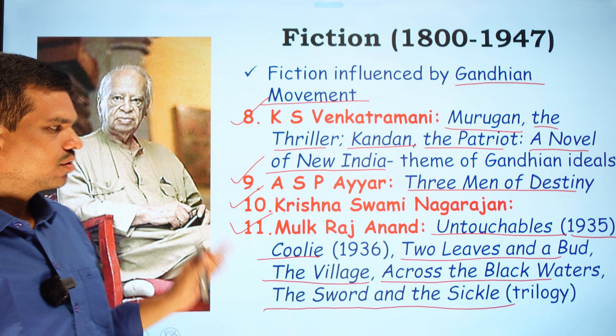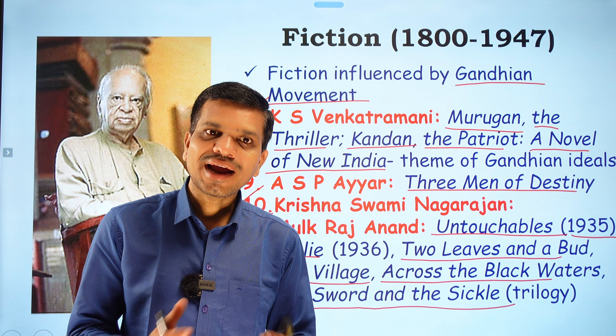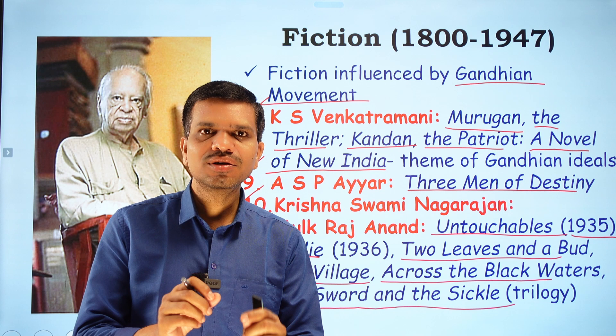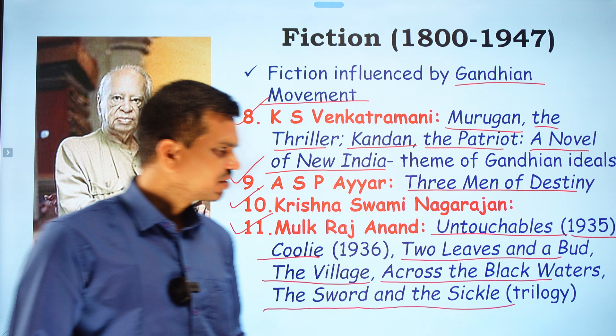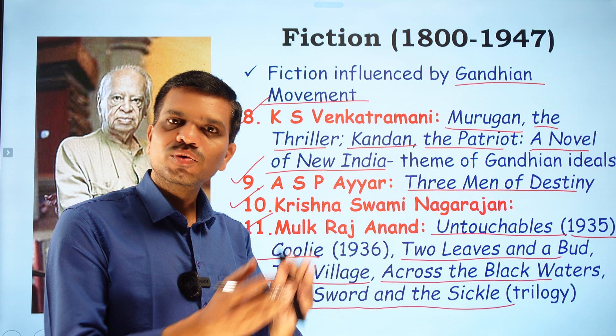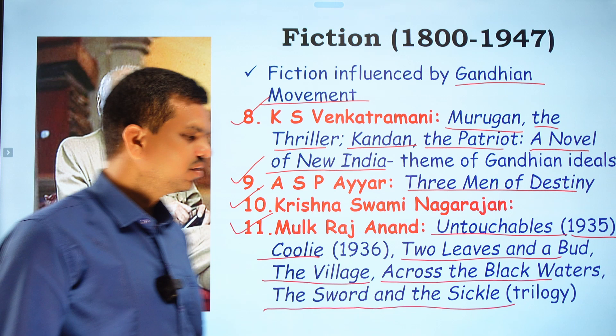Mulk Raj Anand's novels focus on how downtrodden and untouchable people were exploited in society, facing many problems. He closely observed their lives and his titles themselves — Untouchable, Coolie, Two Leaves and a Bud, The Village Across the Black Waters — reflect the themes of exploitation and marginalization embedded in his fiction.